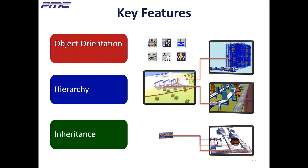Key features of Plant Sim include object orientation, which provides intuitive use of powerful built-in and custom-made objects that let you build models quicker. Hierarchy lets you structure complex models in an intuitive manner and makes it easier to make changes without tediously rearranging things. Inheritance lets you make changes in one place, and all children are changed accordingly, ensuring quality and saving a lot of model building and updating time.